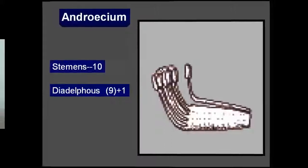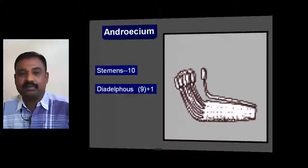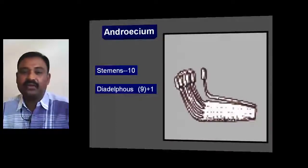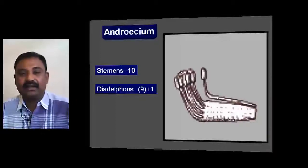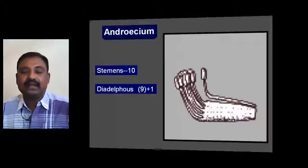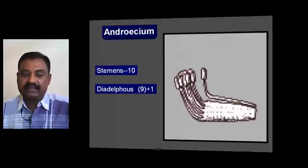There are ten stamens present in Fabaceae. Out of these ten stamens, the filaments of nine stamens are fused together into a single bundle, and one stamen remains as a separate layer. That means the stamens are arranged in two bundles — this condition is called the diadelphous condition.